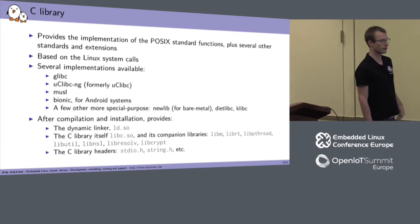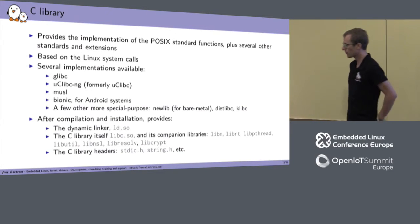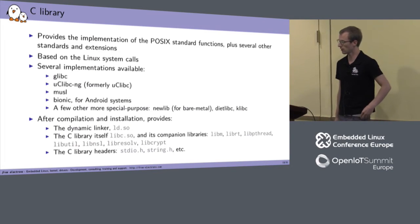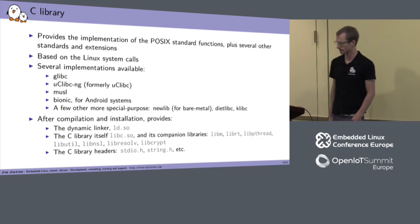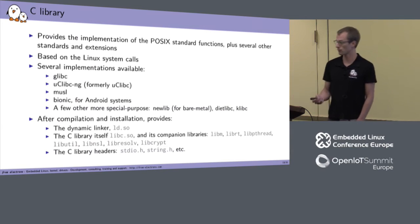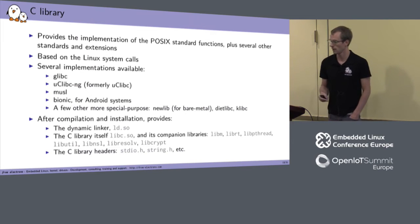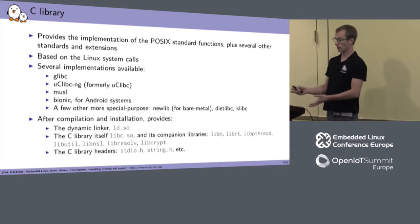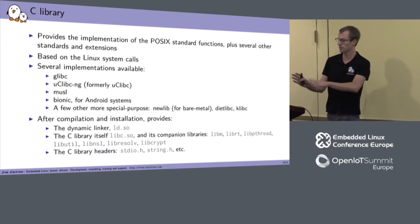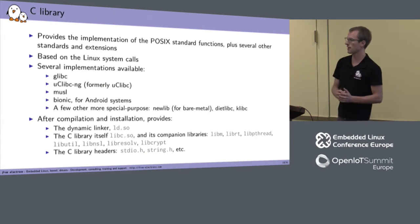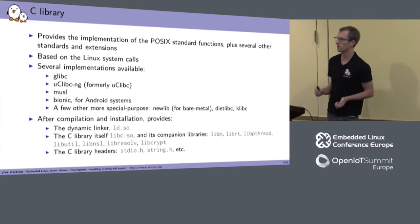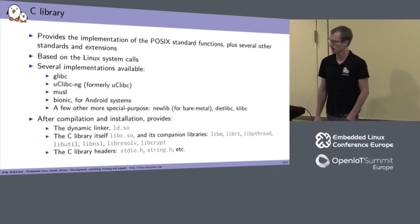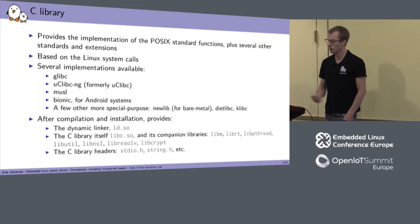The C library provides the implementation of the POSIX standard and often Linux-specific extensions. Based on Linux system calls, there are several implementations: Glibc, uClibc-ng, Musl, Bionic (used for Android), and others. Newlib is mainly for bare metal. Dietlibc and klibc are very tiny libraries for minimal Linux systems. The three most important ones for full-featured Linux user space are Glibc, uClibc, and Musl.